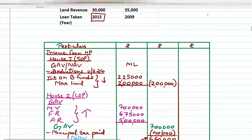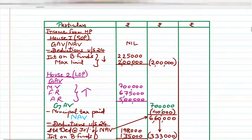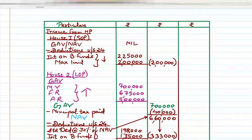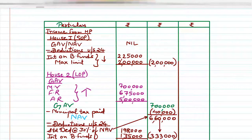House number 1 is Self Occupied Property. The format has two columns: Particular and Amount. Under Income from House Property — House 1 (SOP) — GAV/NAV is NIL, meaning Gross Annual Value and Net Annual Value are both zero. Then, less deductions under Section 24.